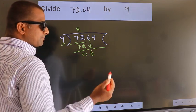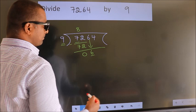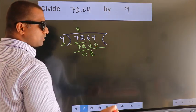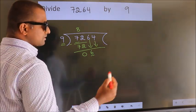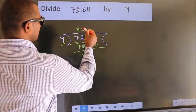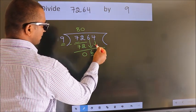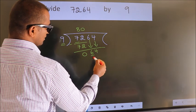So we should bring down the second number. And the rule to bring down the second number is put 0 here. Then only we can bring down this number. So 64.